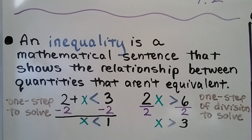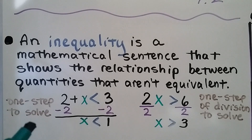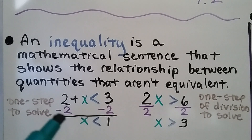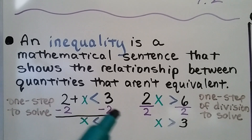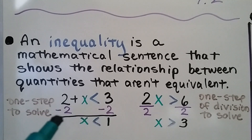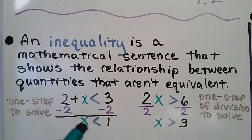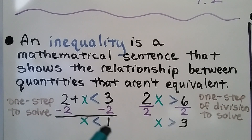For a one-step inequality, we only have one step to solve it. For this one, 2x is less than 3. We just use an additive inverse — a negative 2. We create a zero pair here, and we're left with x is less than 1. 3 minus 2 is 1.